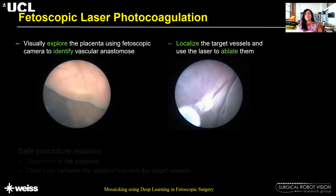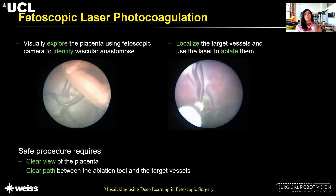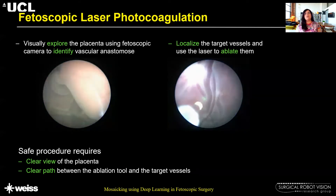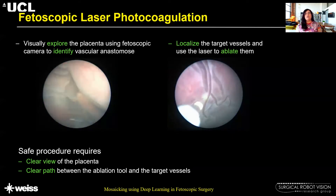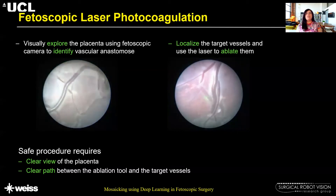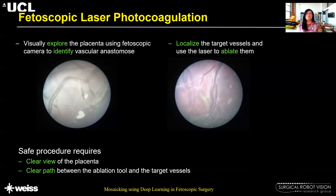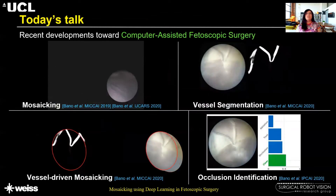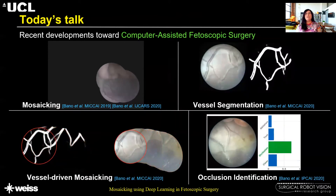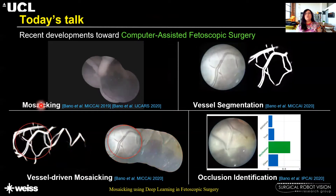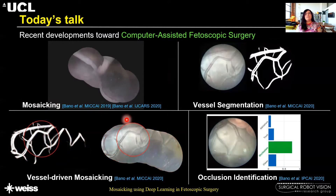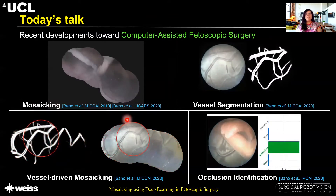For a safe procedure, a clear view of the placenta is required and a clear path between the ablation tool and the target vessels is needed. Computer-assisted techniques can be used here to help guide the clinician during these procedures. Today's talk covers recent developments towards computer-assisted fetoscopic surgery, particularly the deep sequential mosaicing approach presented last year at MICCAI and its extended version recently accepted at IJCARS.